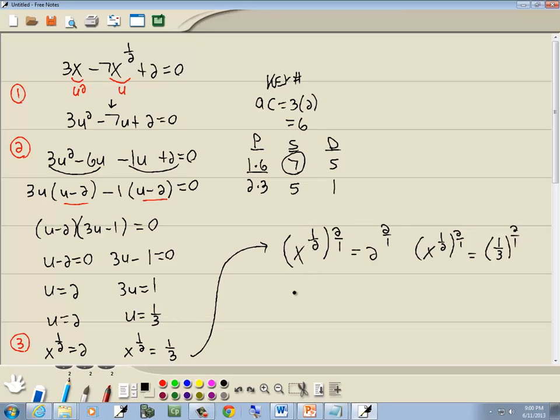2's cancel, the 1's cancel, we've got x. 2 over 1 is 2, so we've got 2 squared, which is 4. Here the 2's cancel, the 1's cancel, we've got x. And 2 over 1 is 2, so we've got 1 third squared, which would give us 1 ninth.